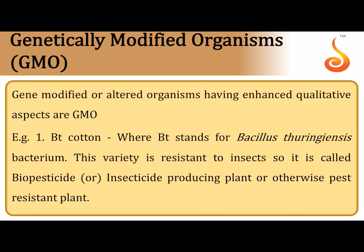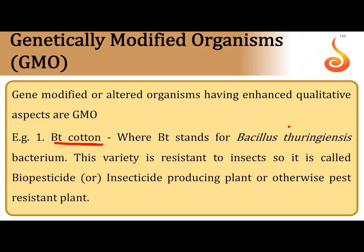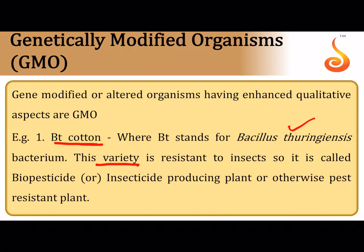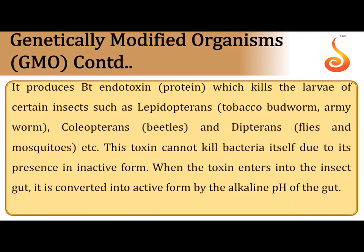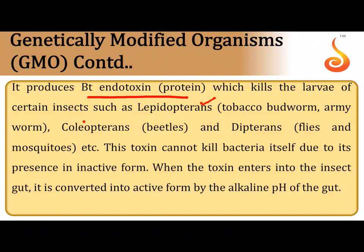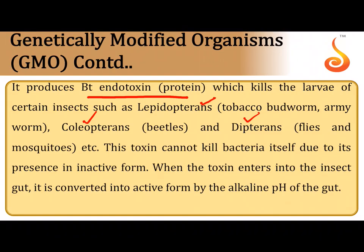Organisms whose genetic makeup has been modified are called genetically modified organisms. The most famous example is Bt cotton, where Bt stands for Bacillus thuringiensis, the source of the Bt toxin genetically incorporated into the plant. This variety carries the gene for Bt toxin and is resistant to insects, acting as a biopesticide. It acts against lepidopterans, coleopterans (beetles), and dipterans like flies and mosquitoes.